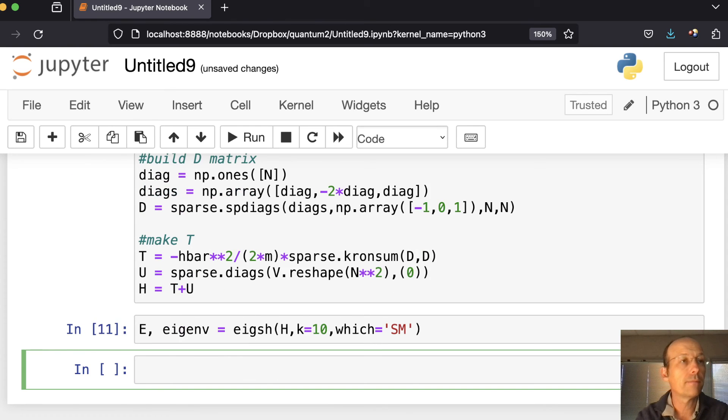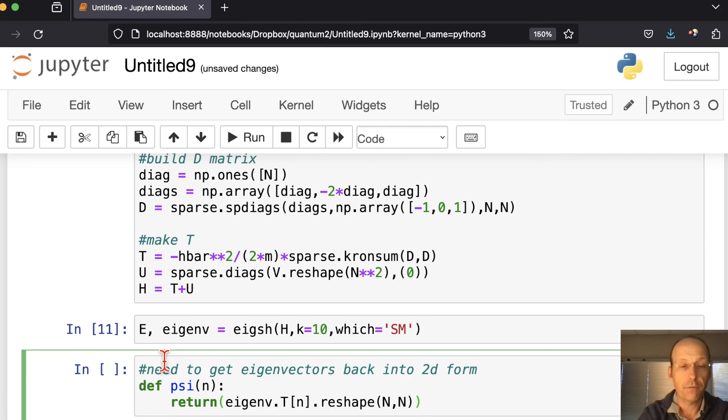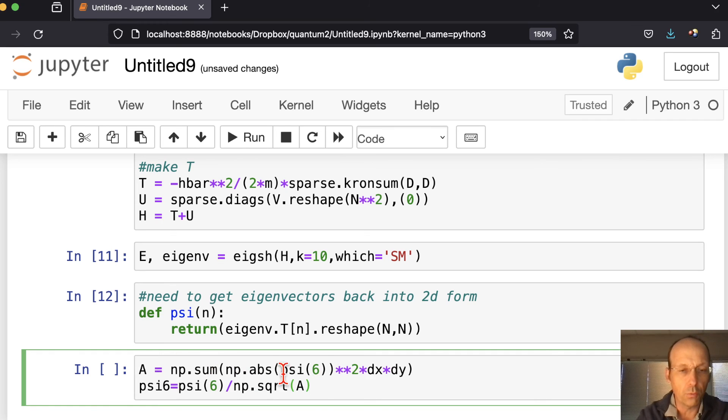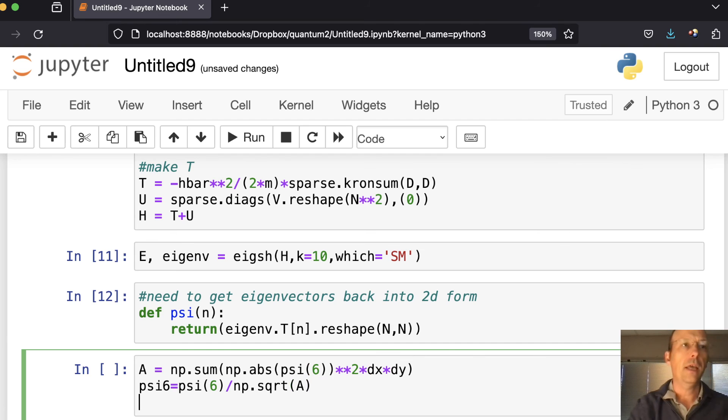Now, I'm going to solve for my eigenvalues and eigenvectors. This is the part that can take a while. Oh, it didn't take that long. Strange. Now, I'm going to define my thing that gets the eigenvalue. Run that. I'm going to normalize one of them.